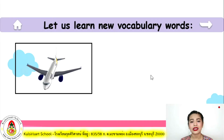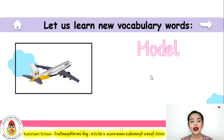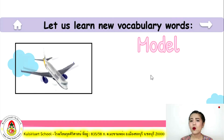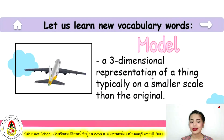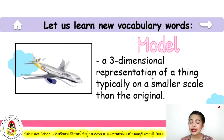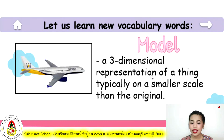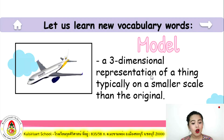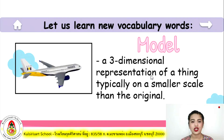What picture is that? That is a picture of a model. A model is a three-dimensional representation of a thing, typically on a smaller scale than the original.